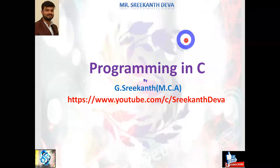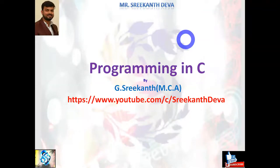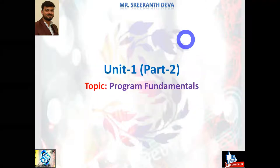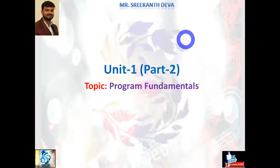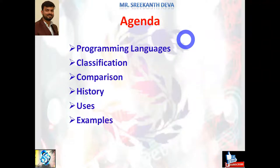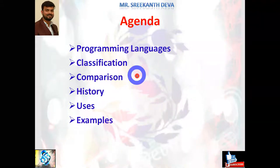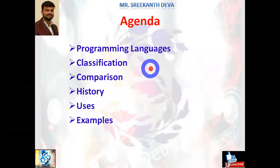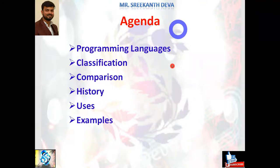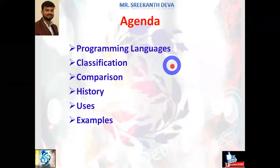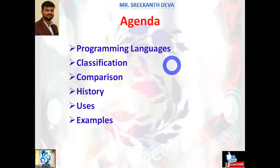Hello students, I am Sri Khan. We are discussing programming in C language. The agenda of this session covers programming languages: classification, comparison, history, users, and suitable examples. In the previous video session we discussed what is a program, what is a programming language, various programming languages, generations of programming languages with examples. In this session I try to give much more clarity about classification, comparison, history, and users — and we need to concentrate on where the C language history can be found.